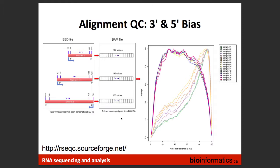To programmatically flag coverage bias, one metric you can use is the ratio of 5' to 3' coverage. With all these metrics, there isn't one universal threshold number — it really depends on your institute and your project. But you can come up with a cutoff to flag samples. RSeQC doesn't flag pass/fail like FASTQC — it just provides numbers that you have to interpret yourself.